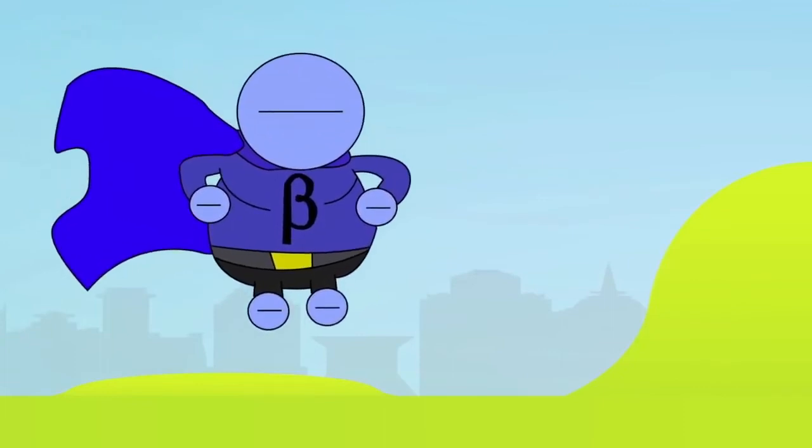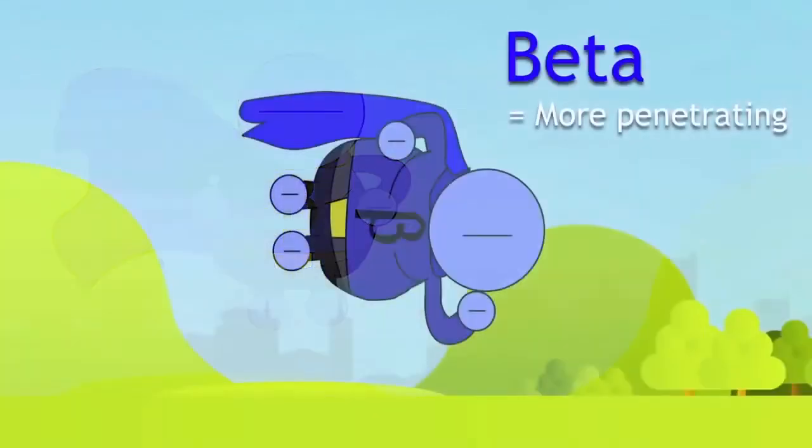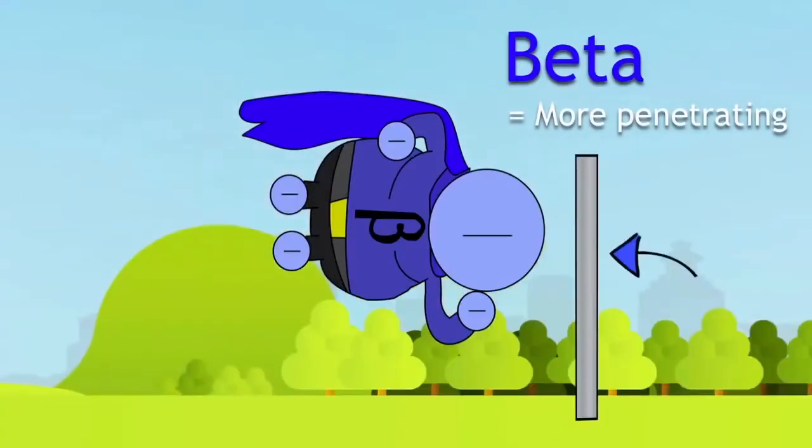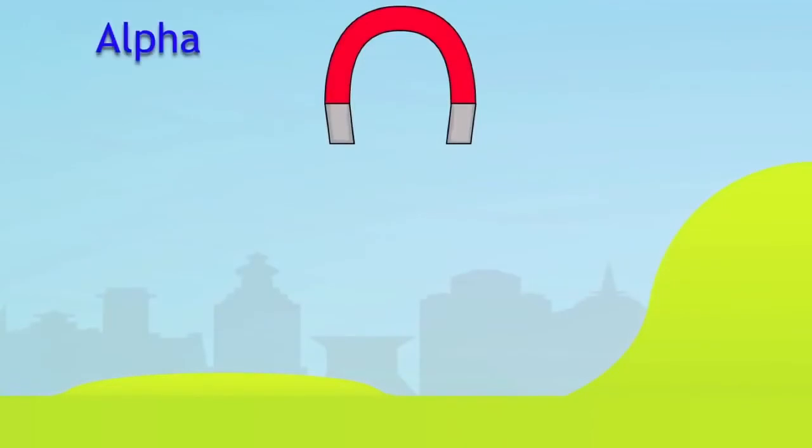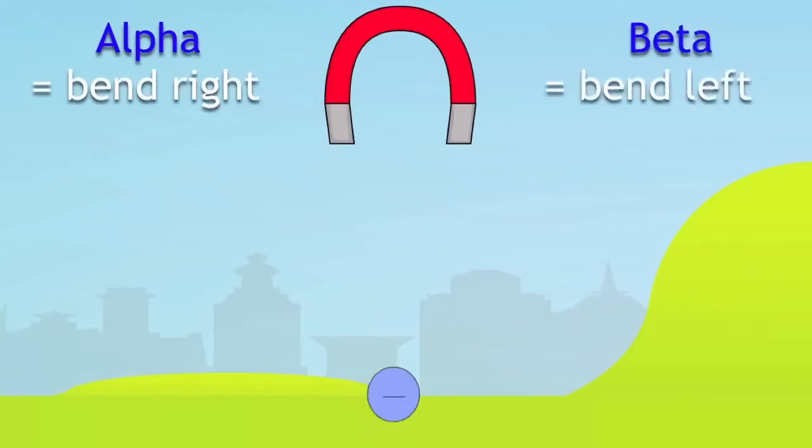The second type of radiation is more difficult to stop. So in other words, it's more penetrating. It is stopped by about half a centimeter of aluminum. And although it's affected by a magnetic field, remember the alpha particles bending off to the right, then the beta particles would bend off to the left.